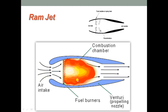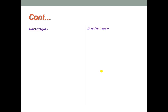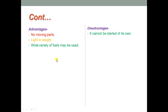The expansion of gases towards the diffuser entrance is restricted by pressure barriers and undergoes expansion converting pressure into kinetic energy. The high velocity gases leaving the nozzle provide forward thrust to the unit. The best performance of the ramjet engine is obtained for a speed range of 1700 to 2000 km per hour. Advantages include no moving parts, light weight, and wide variety of fuels can be used. Disadvantages are that it cannot start on its own, and fuel consumption is too large at low and moderate speeds.